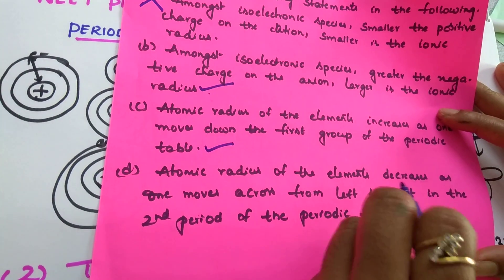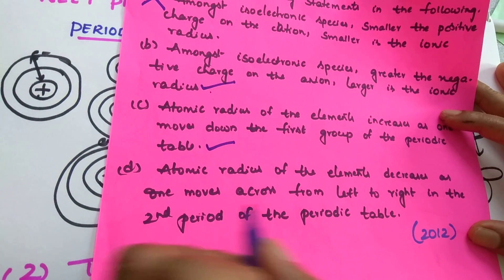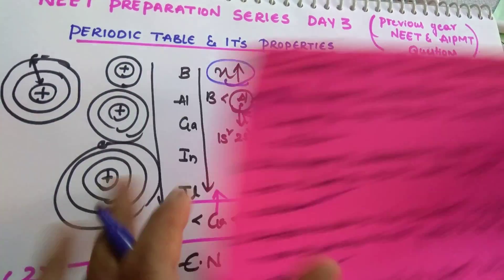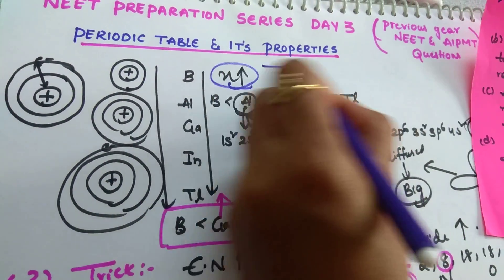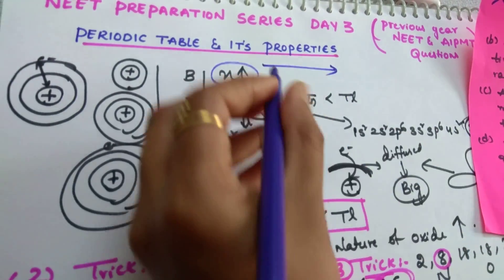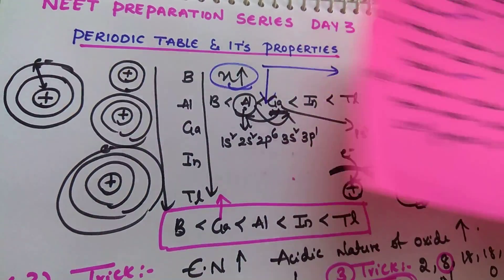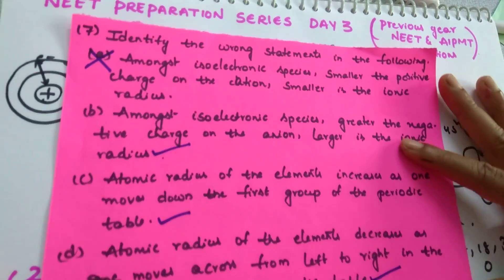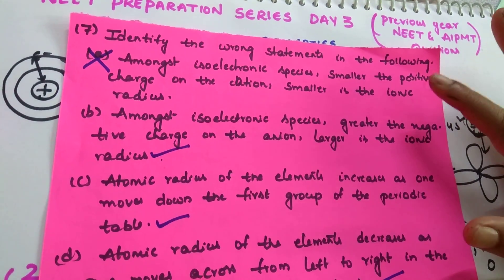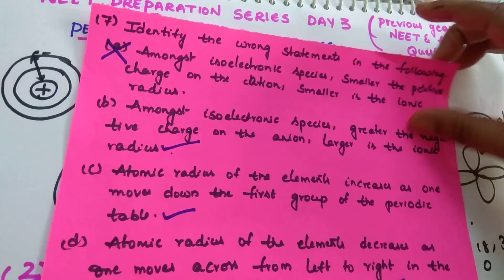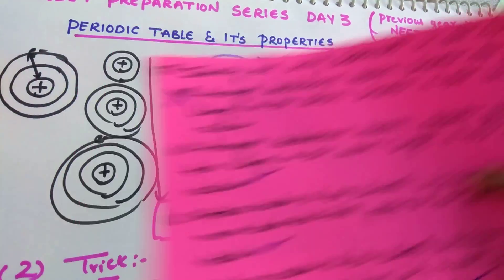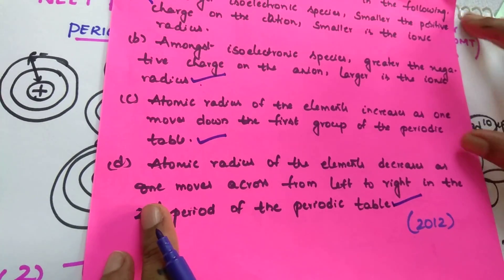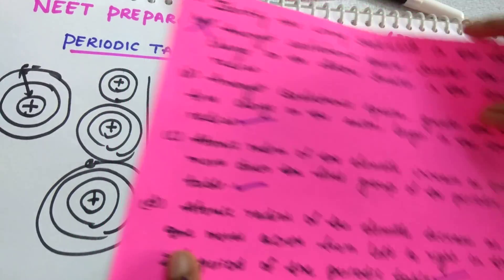Atomic radius of the elements decreases on increasing atomic number. Usually, atomic radius decreases from left to right in the periodic table and increases from top to bottom. So this is also a correct statement. The incorrect option is the first one. Note: a 2012 question also came from isoelectronic species — that is one of the most important topics.